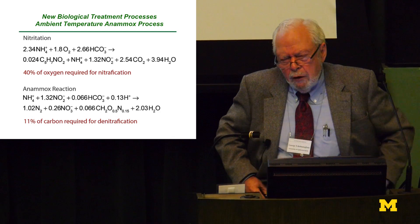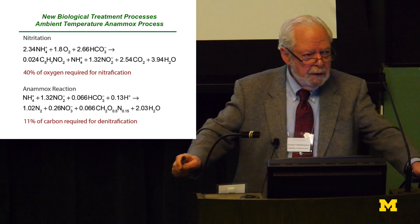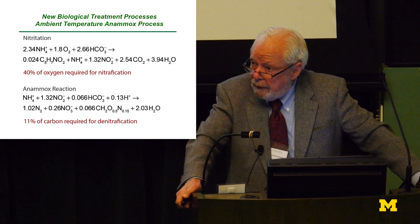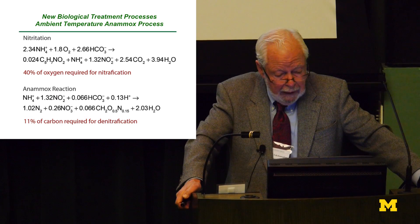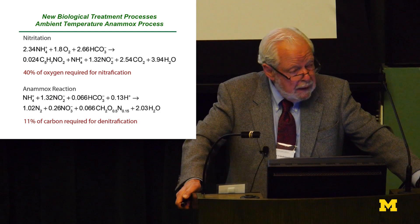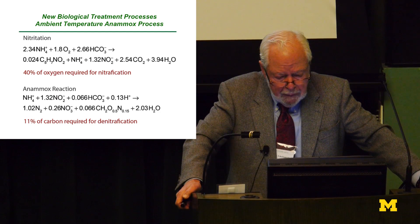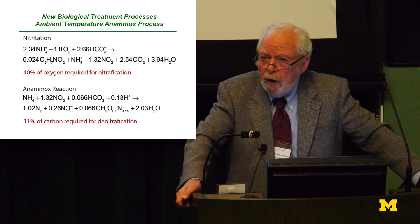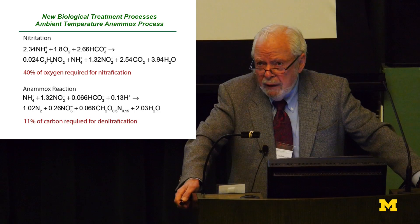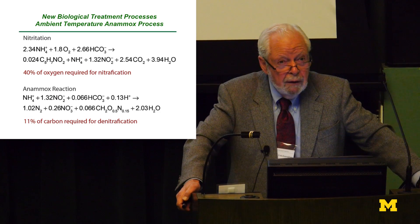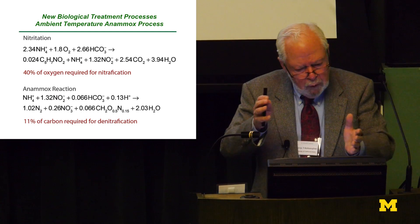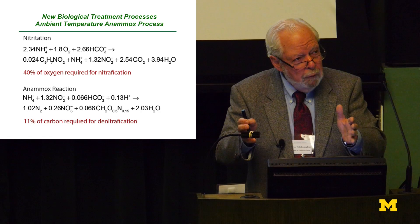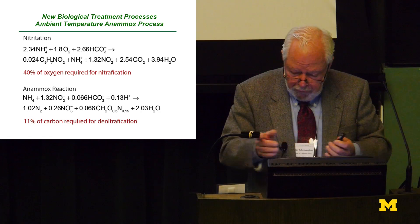There are exciting biological processes. The anammox process: instead of nitrification, you go to nitritation, and then the anammox reaction takes nitrite with ammonium and converts it to nitrogen gas. Advantages: 40% less oxygen use, 11% less carbon. It's been applied primarily to high-strength return flows, but researchers are working on ambient anammox treatment. I think within five years you will see this as a usable technology. The anammox bacteria were always there but weren't identified until about 12 to 15 years ago.